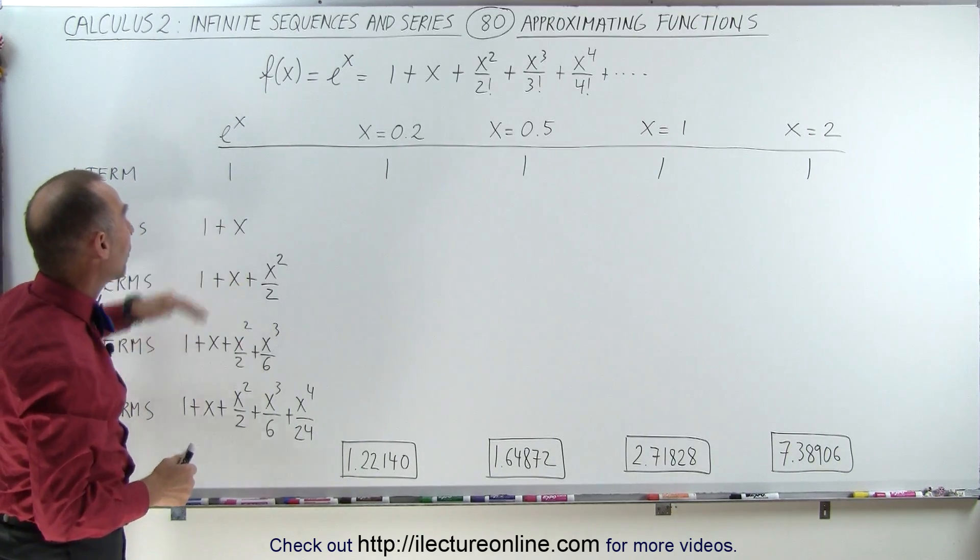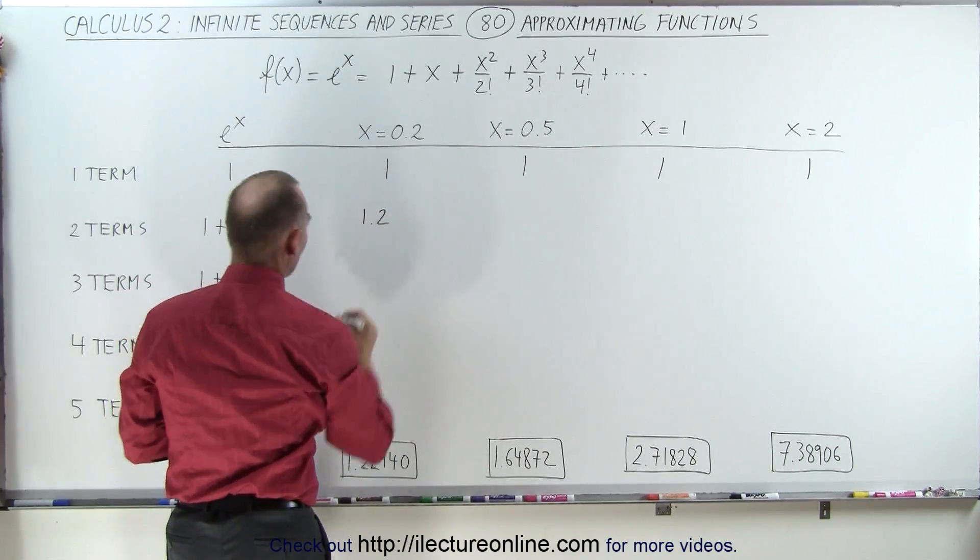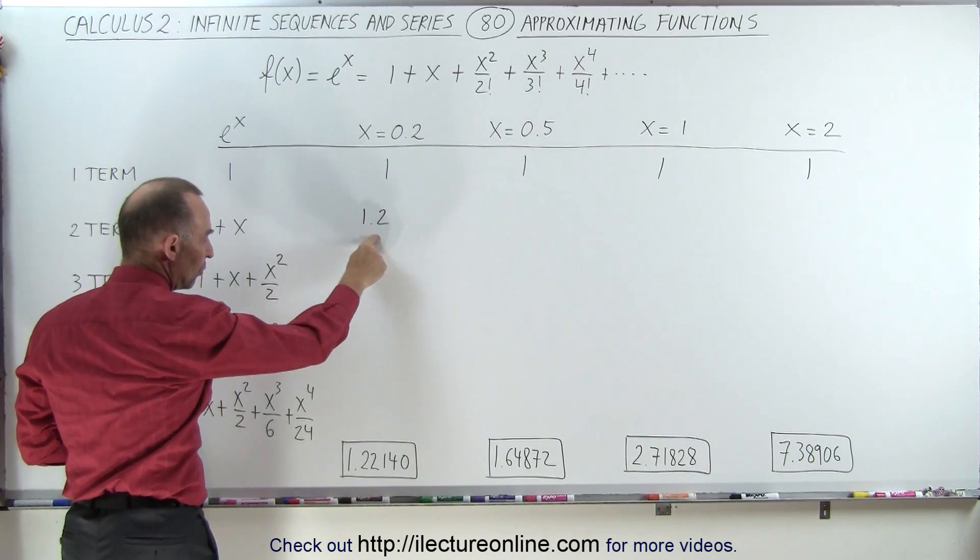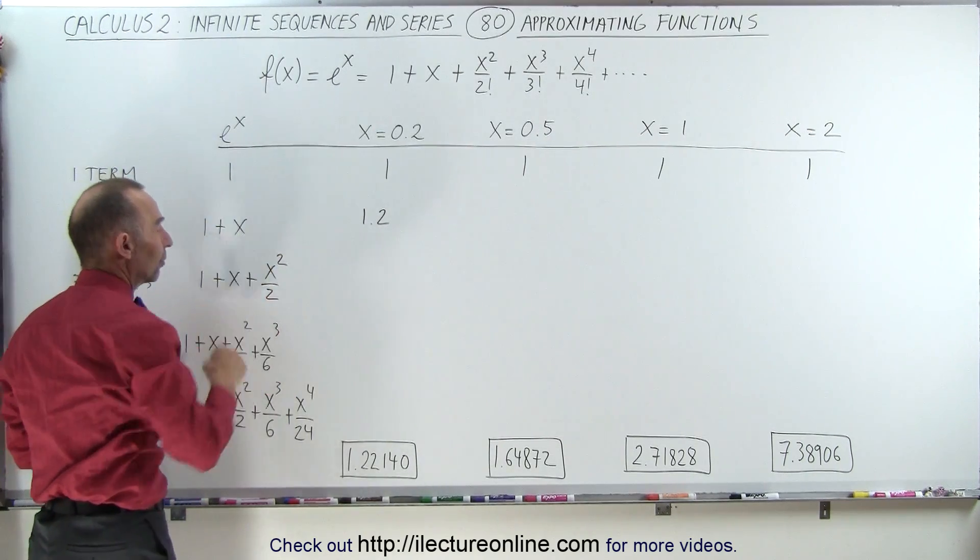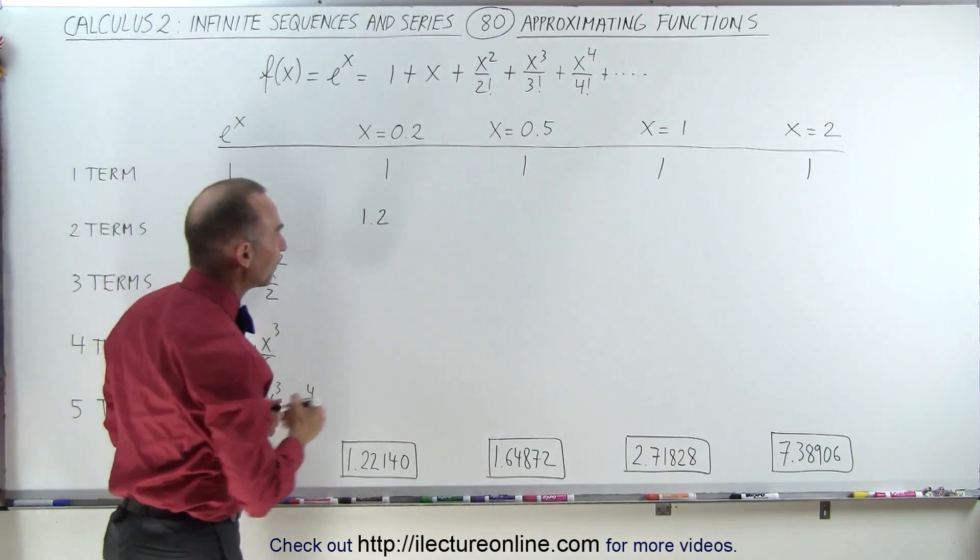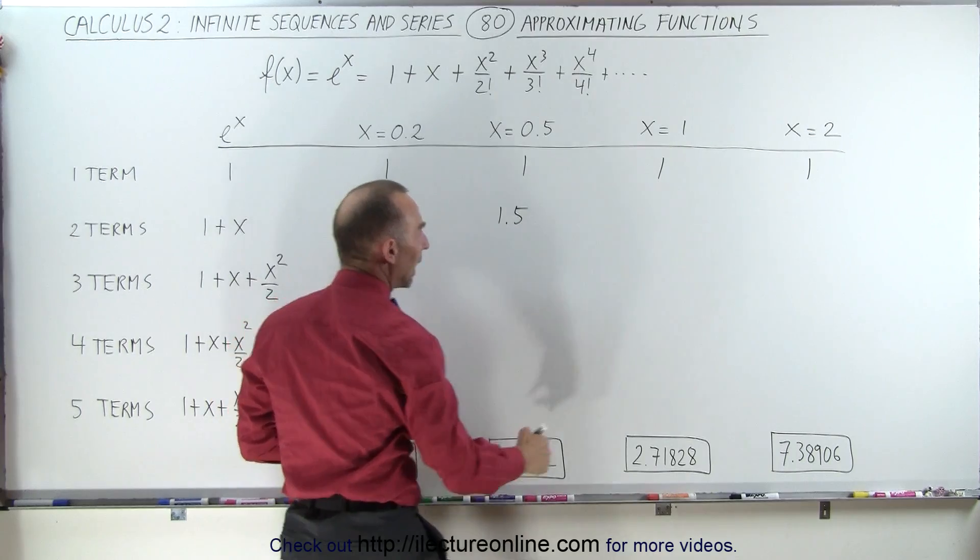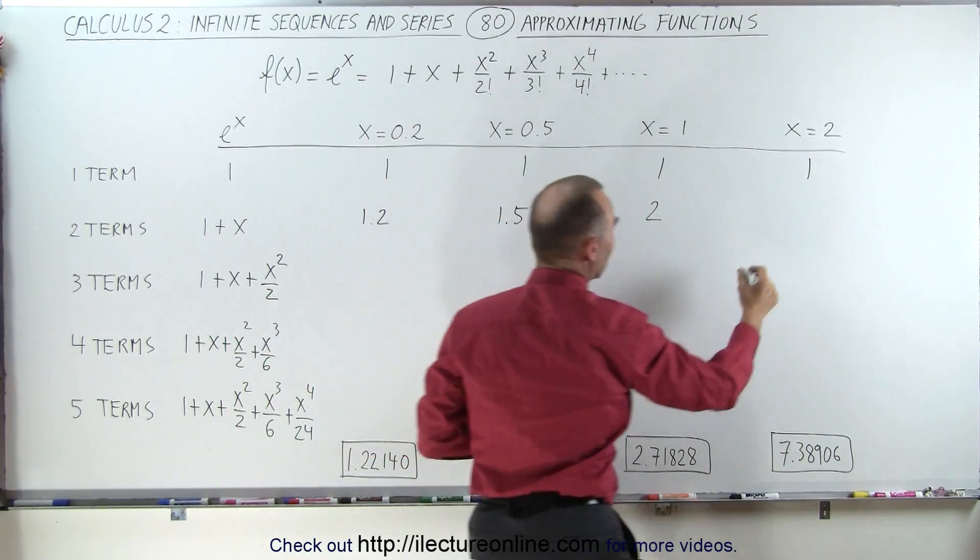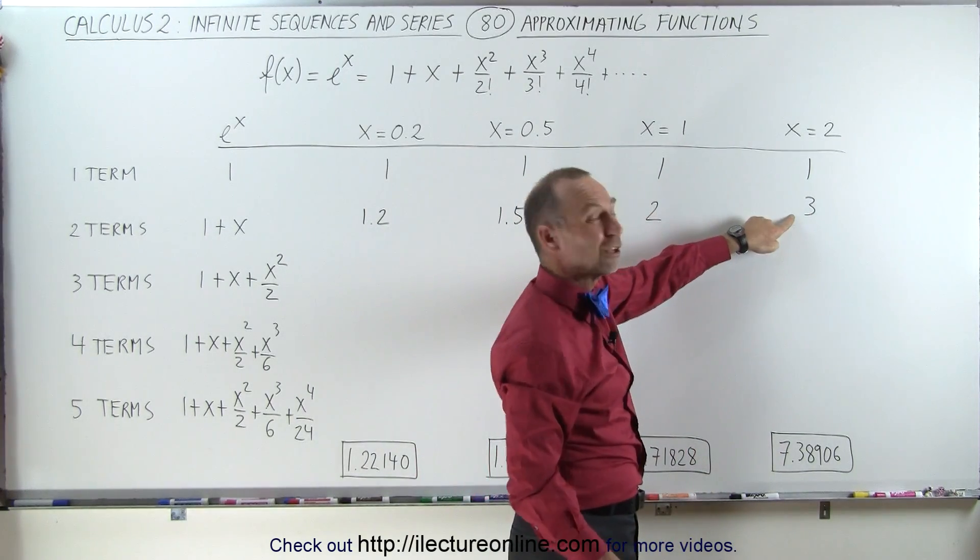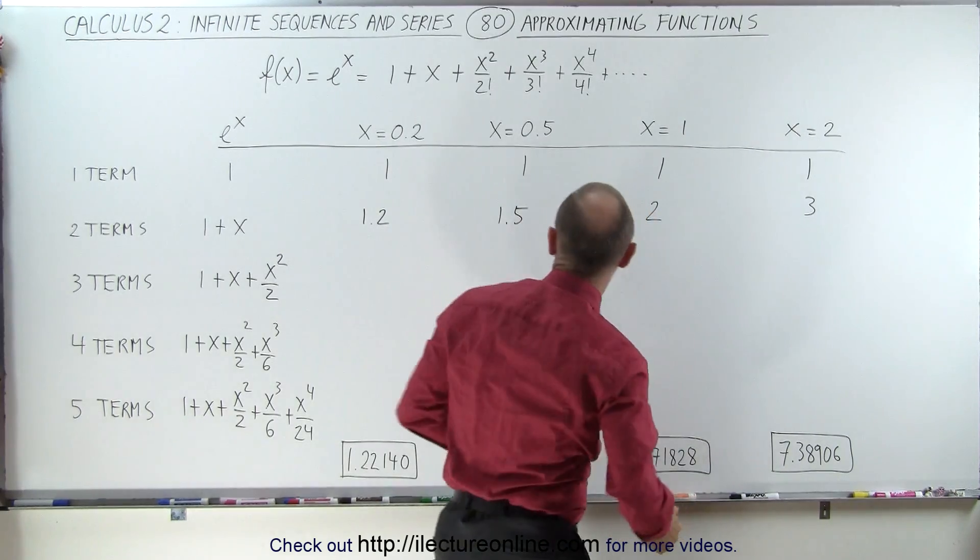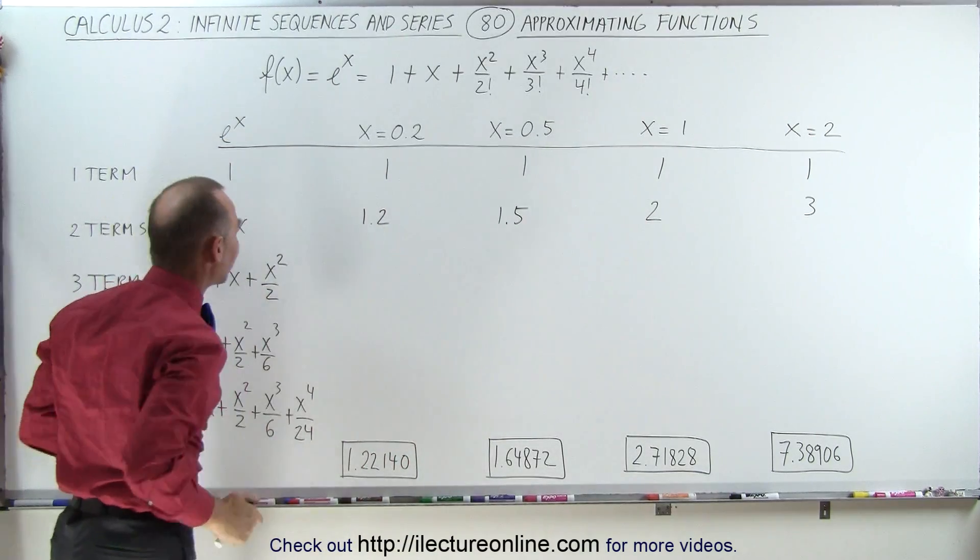How about if we have two terms? Well, now we're going to add one plus the value for x. So this becomes 1.2. And notice after only the first two terms, you get a reasonably close value for e to the 0.2 power. Here we get 1.5. Notice it's not as close, but not too bad. Here we get 1 plus 1, which is 2. And here we get 1 plus 2, which is 3. Notice that for the value of x equals 2, you don't get anywhere close to having the correct number for e to the second power when you only take the first two terms.